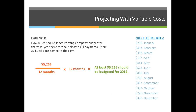Example one: how much should Jones Printing Company budget for the fiscal year 2012 for their electric bill payments? Their 2011 bills are posted to the right. The first thing we have to do is add them all together: $260 plus $403, all the way down — that totals $5,256. We divide that by 12 to get an averaged monthly cost, then multiply it by 12 months. So we have to budget at least $5,256 for the 2012 budget. Make sure you follow the formula, because sometimes you're not given all 12 months in the year.